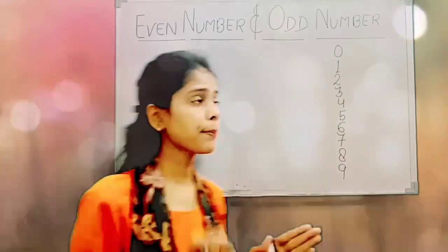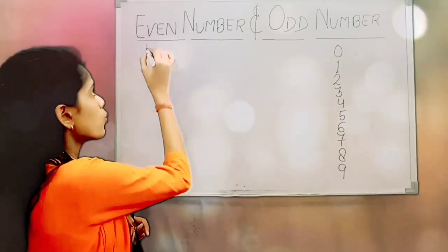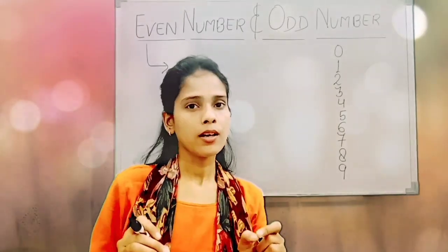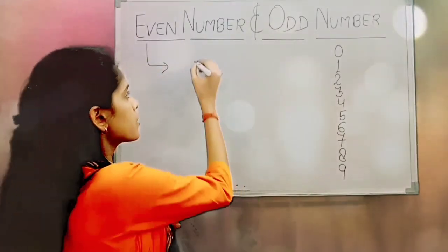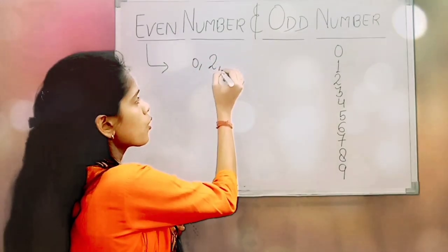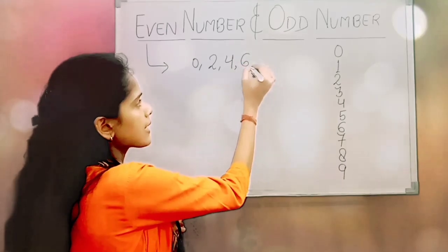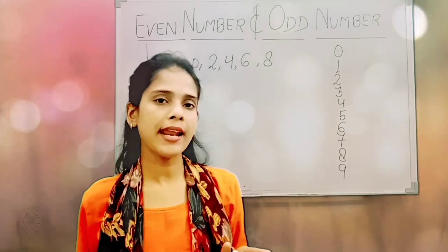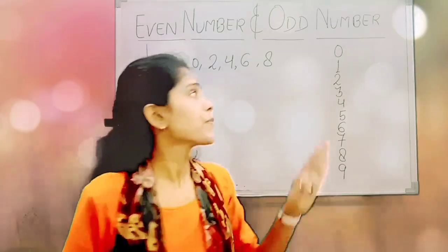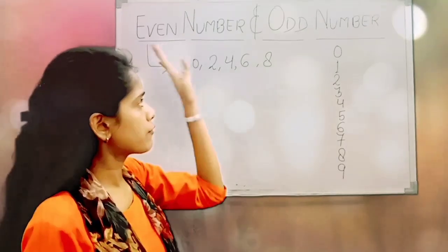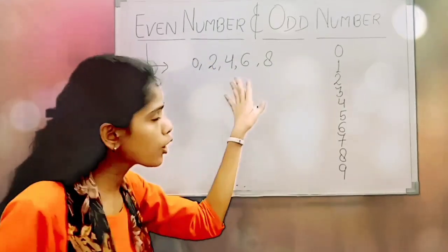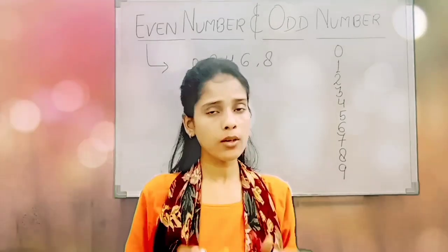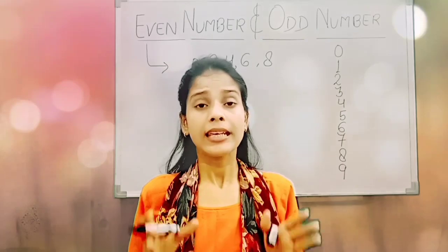So let's understand the concept of even number. What is even number? Even number means if a number has 0, 2, 4, 6, or 8 at the ones place — kisi bhi number mein, ones place pe 0 ho, ya phir 2 ho, ya phir 4 ho, ya phir 6 ho, ya phir 8 ho — to aap keh sakte ho, that number will be an even number.